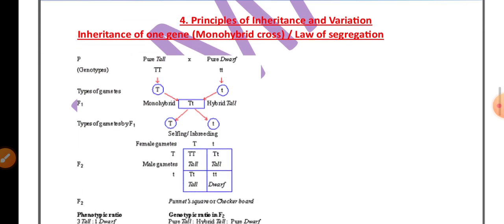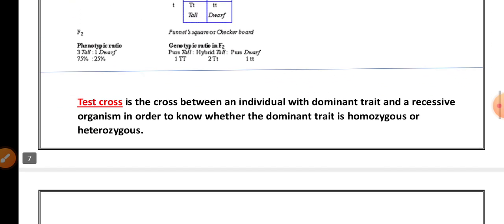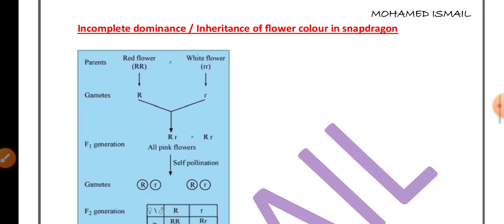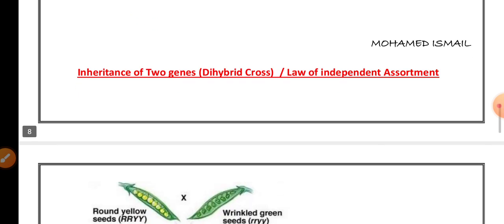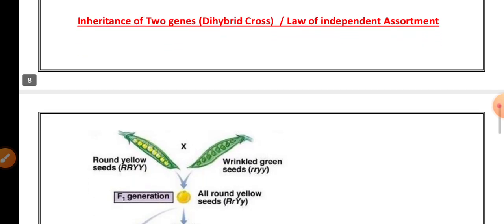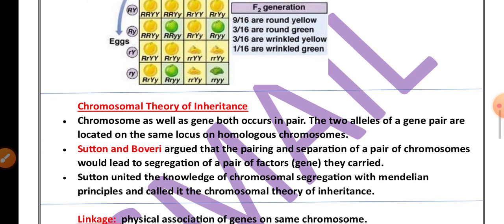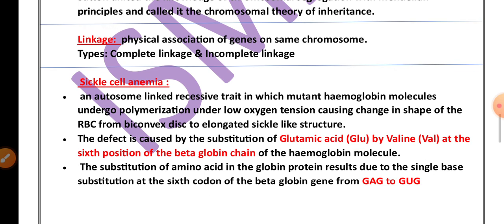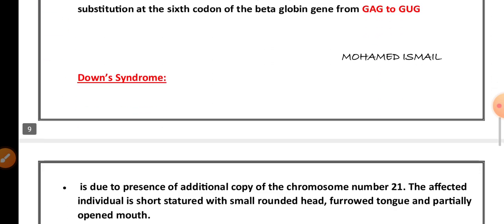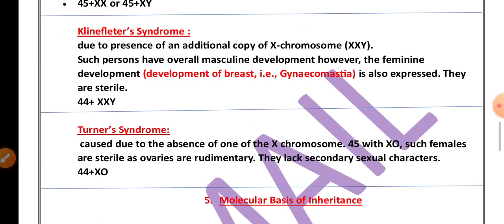The fourth chapter is principles of inheritance and variation. From this chapter, monohybrid cross, test cross, incomplete dominance, co-dominance, and inheritance of two genes — also called dihybrid cross — are very important for five marks. For three marks, chromosomal theory of inheritance, linkage definition and its types, sickle cell anemia, Down syndrome, Klinefelter syndrome, and Turner syndrome are compulsory questions.